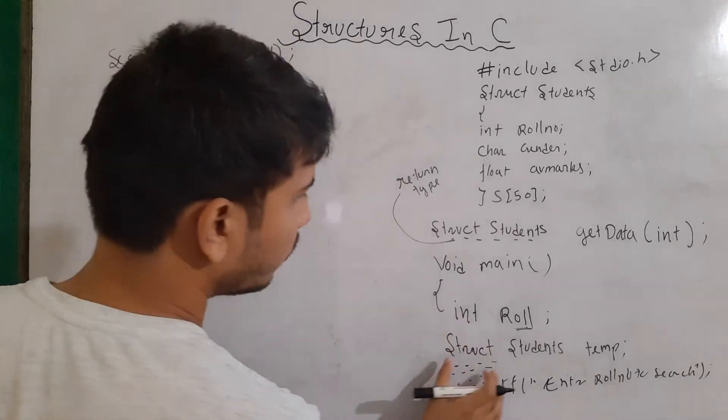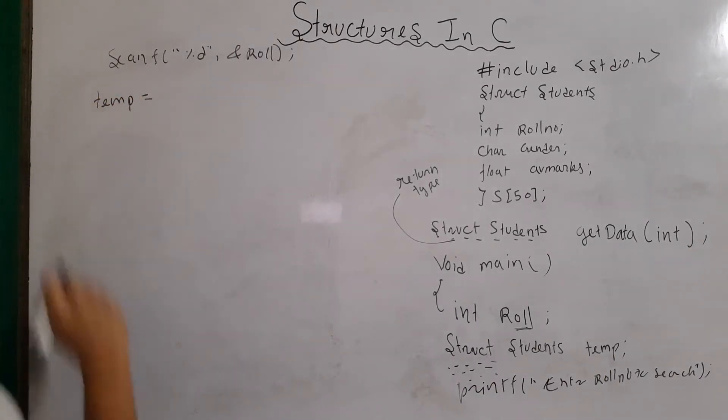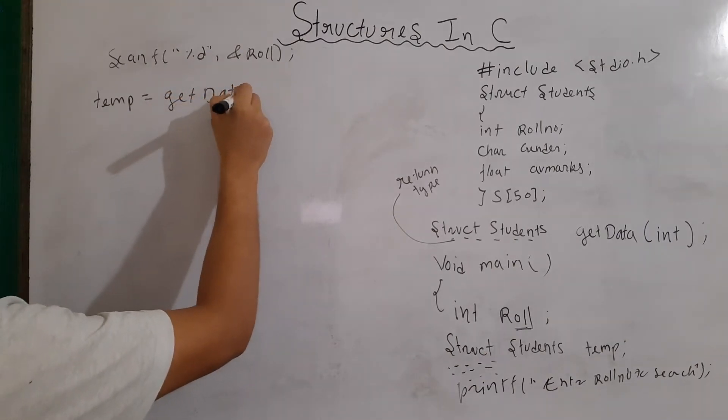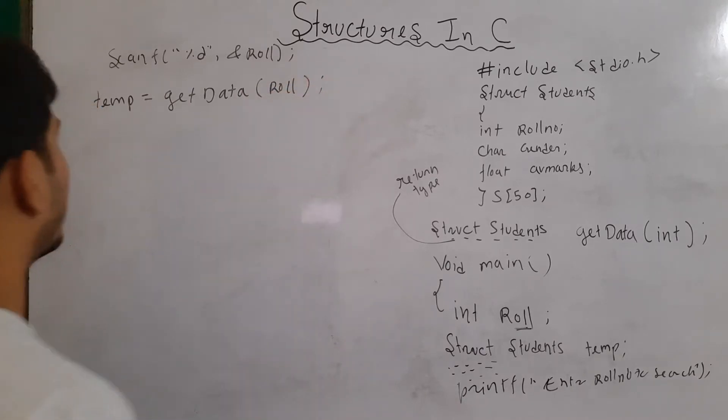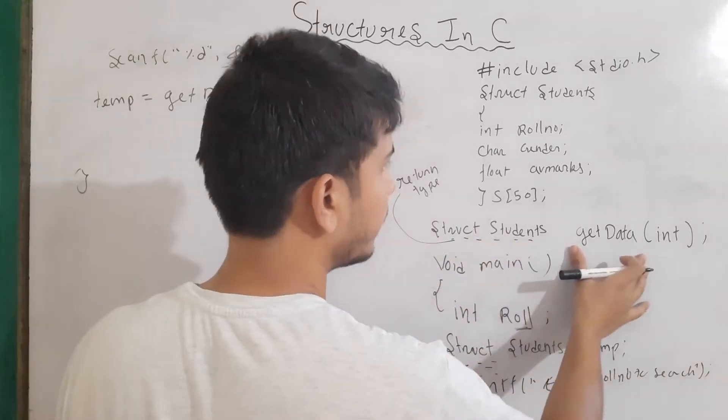Now, what I will do, this temporary variable, I will assign it with the get data. And then, I will send it the value of role. Now, before I move further, let's close it for now. And let's try to make the definition of our function.